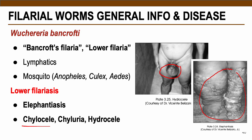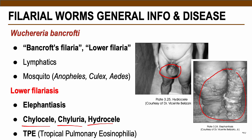Chyluria is the presence of milky urine due to lymphatic fluid traveling from the scrotum to the bladder. Hydrocele refers to clear fluid presence in the scrotum. Wuchereria bancrofti may also cause tropical pulmonary eosinophilia, characterized by pulmonary signs and symptoms such as coughing, difficulty breathing, and lung inflammation.